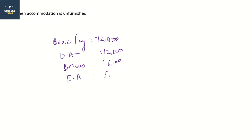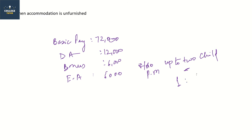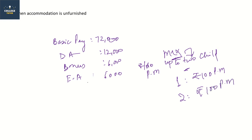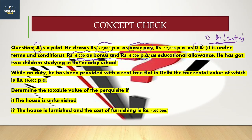The Education Allowance exemption is 100 rupees per month, maximum for two children. So if there is one child, it is 100 rupees per month exempt. Maximum two children can be exempted. In this case, he has two children studying in a nearby school, so the exemption will apply for both children. If there were a third child, that child would not get the exemption. While on duty, he has been provided with a rent-free flat in Delhi.